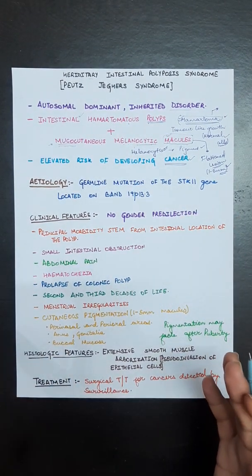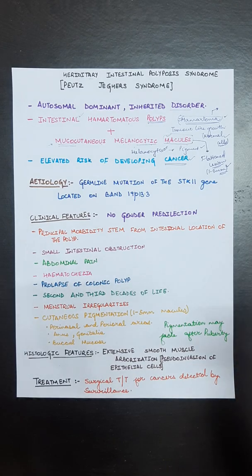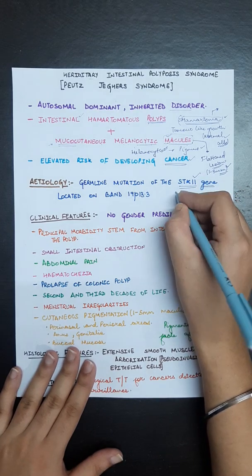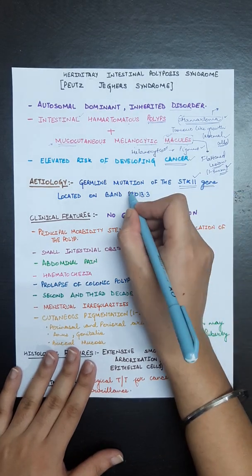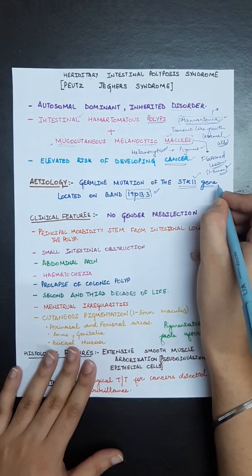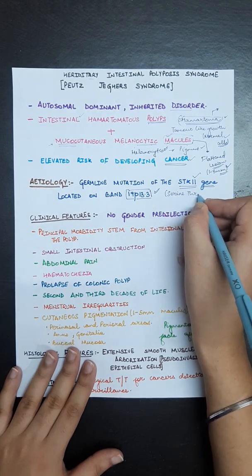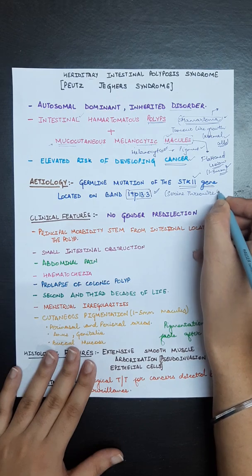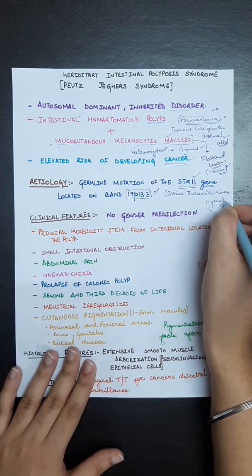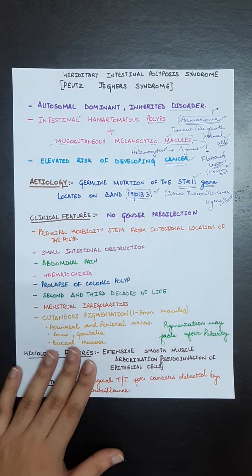Now the etiology. It is a hereditary, inherited disorder, so there will be a germline mutation in the STK11 gene, serine threonine kinase 11 gene, which is located on band 19p13.3.